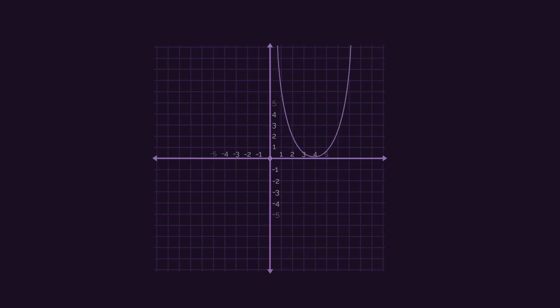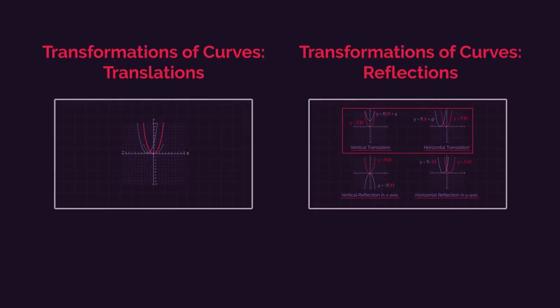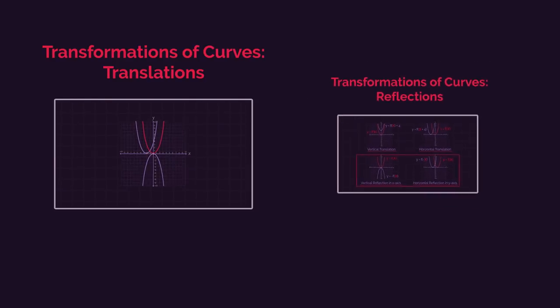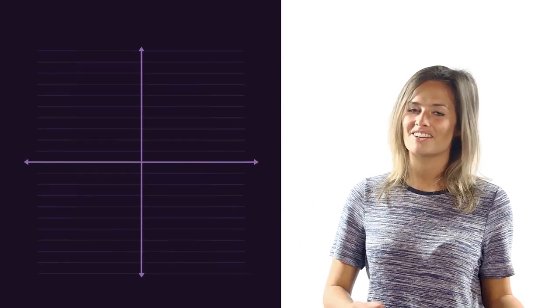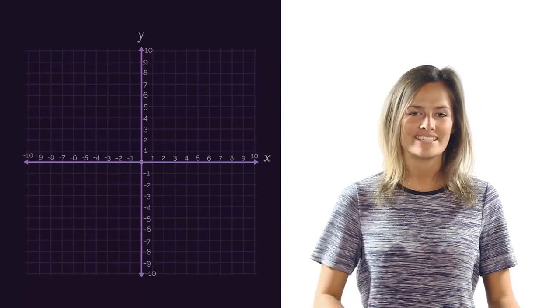Graphs can be shifted and reflected, stretched and squashed. These are all known as transformations. We looked at translating and reflecting in these videos. So now we're going to look at stretching and squashing. We'll discover how the equation of the graph looks compared to its changed shape.